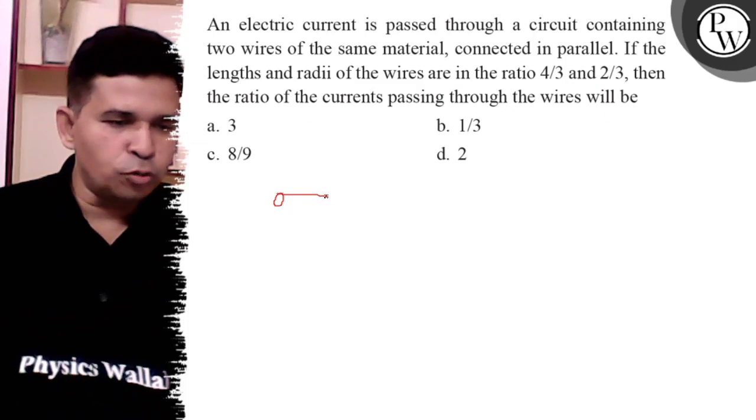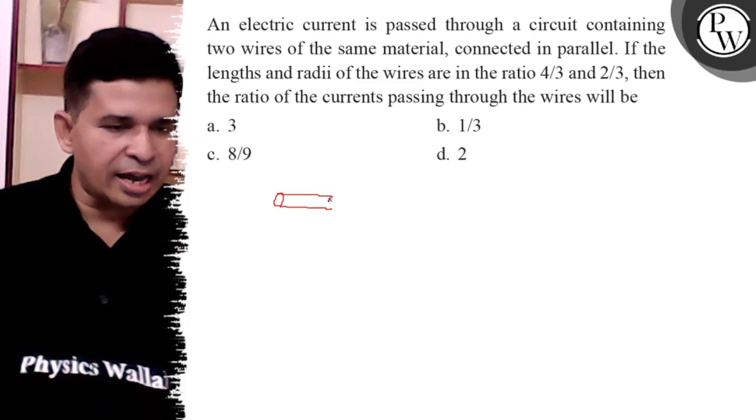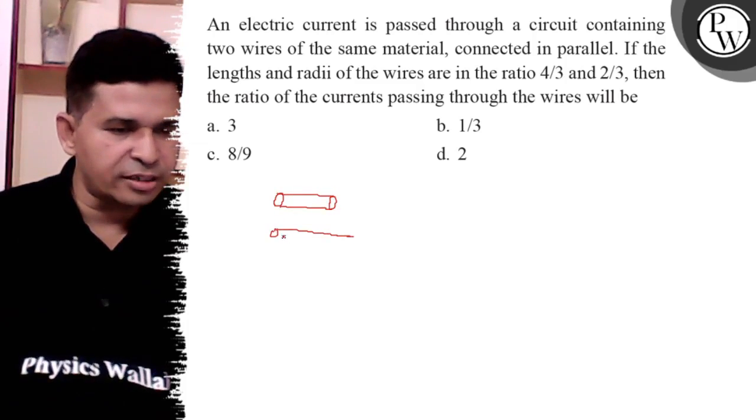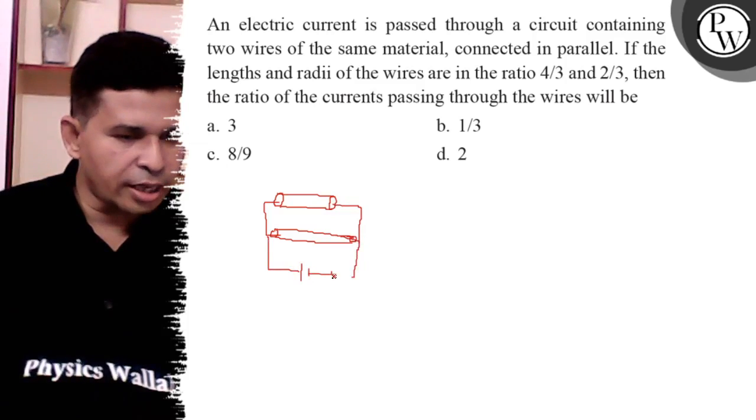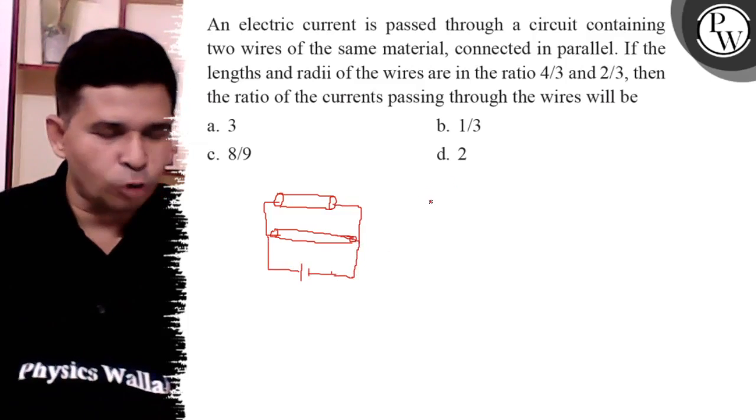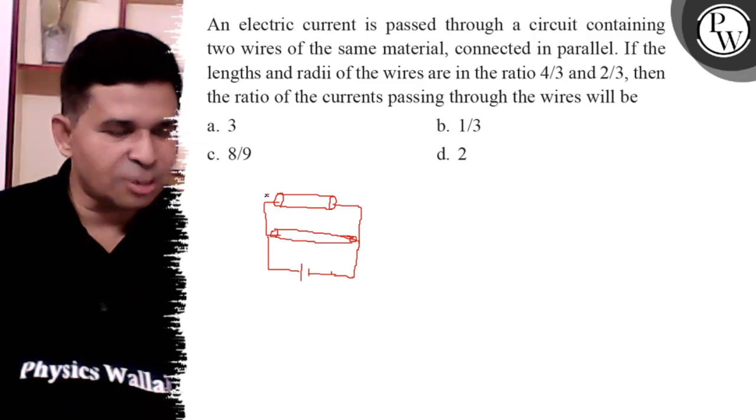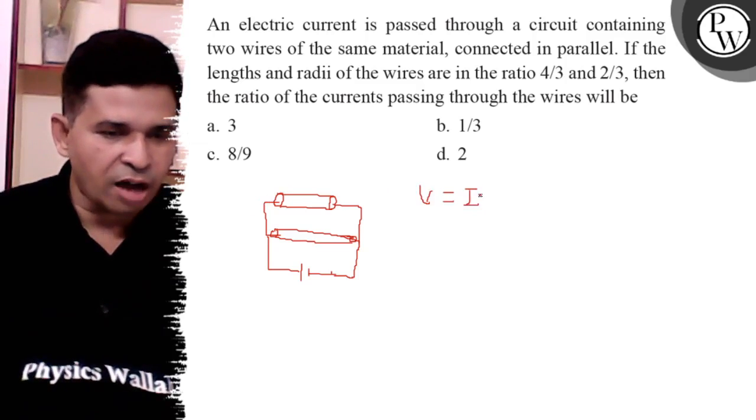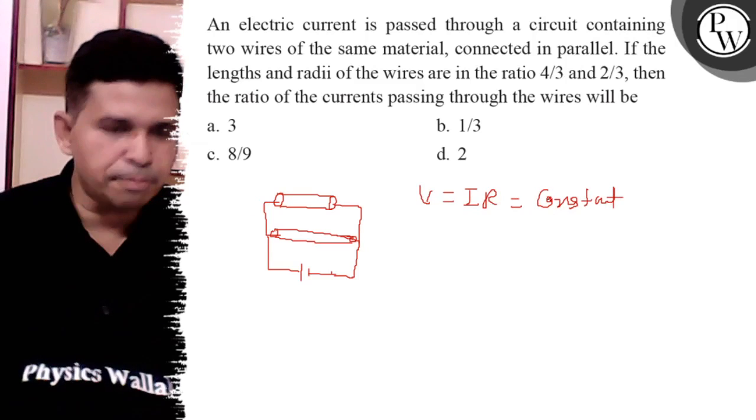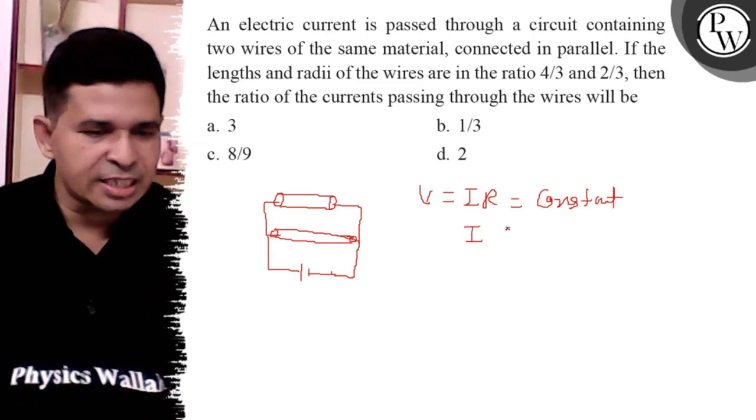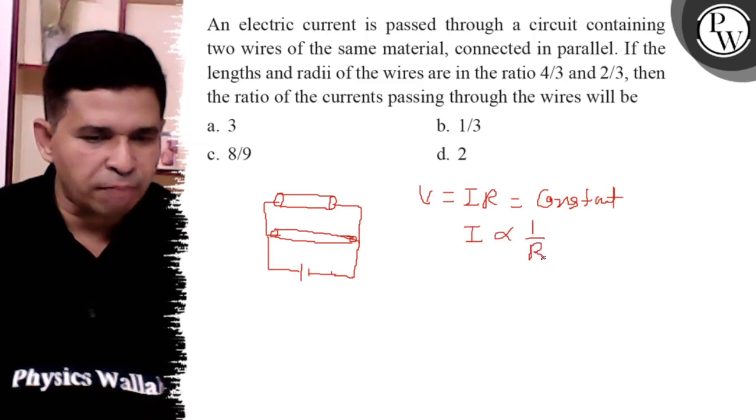We know that two wires are in parallel having different length and different cross-section radius. In parallel, voltage is constant. So V equals IR is constant. Because in parallel voltage is constant, I is inversely proportional to resistance, 1 by R.